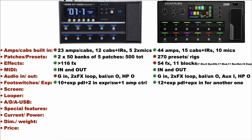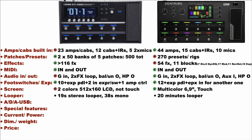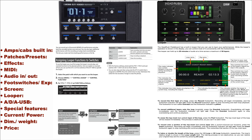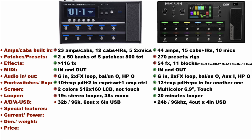The screen size of the Headrush is way better — no doubts here. As regards the looper, the GT1000 has a 19-second stereo looper while the Headrush has a 20-minute looper, so the Headrush is better. In the comparison chart you can also find the looper controls of the two units, and in my channel I've also done a video about the GT1000 looper. As regards ADA conversion and USB capabilities, the Boss is better with 32-bit converters at 96kHz, and it offers a 6-in 6-out USB audio interface while the Headrush has 4-in and 4-out USB channels.